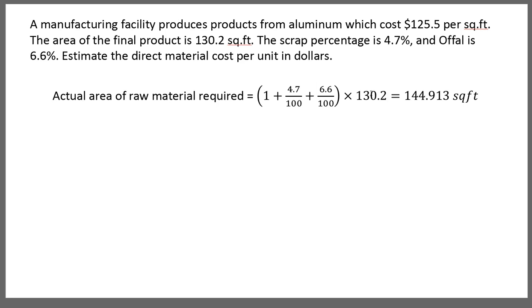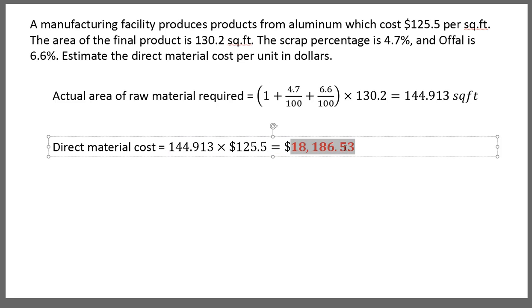So this quantity multiplied by 130.2 will give the actual area of the material required in the beginning before we start the manufacturing. Now if you multiply that area with the per area cost then you will get the total cost associated with that particular product. Now remember this is $18,186.53 per unit. So this is how you estimate the actual material cost.